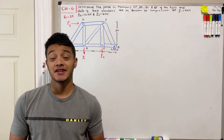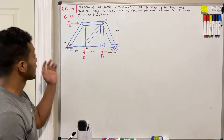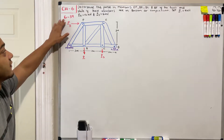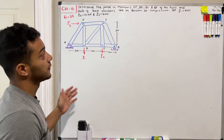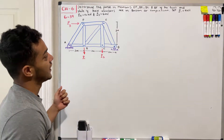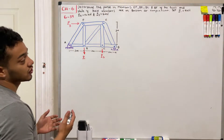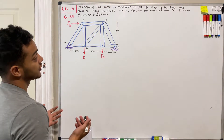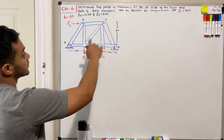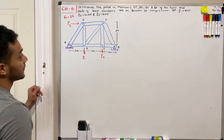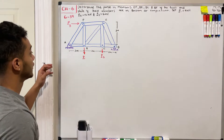Welcome back everyone to Learning by Teaching. We're in statics and today we're going to do problem 6-37. It says determine the force in members EF, BE, BC and BF of the truss, and state if these members are in tension or compression. Set P1 equal to 9 kN, P2 equal to 12 kN, and P3 equal to 6 kN.